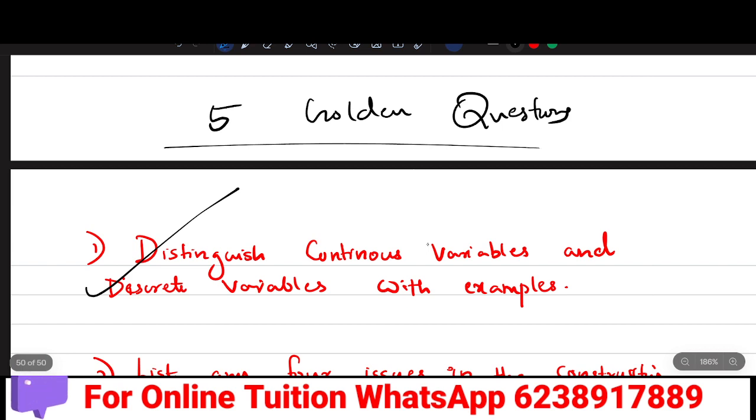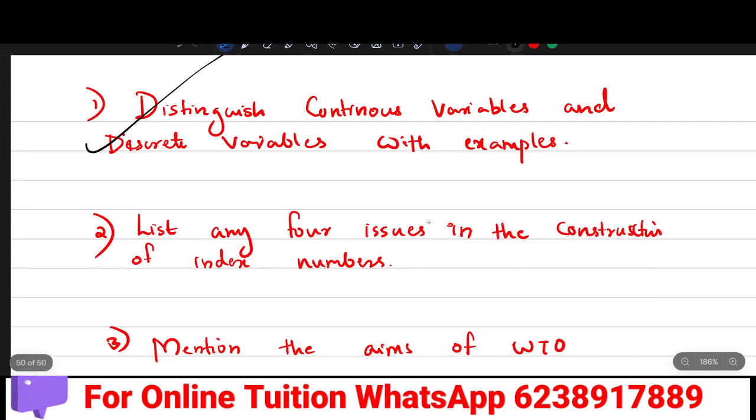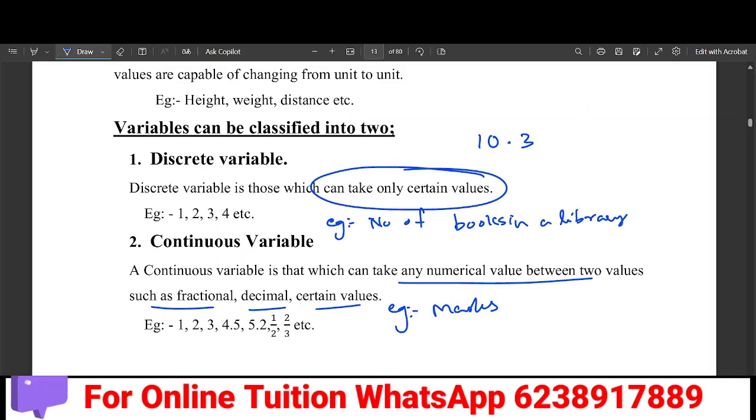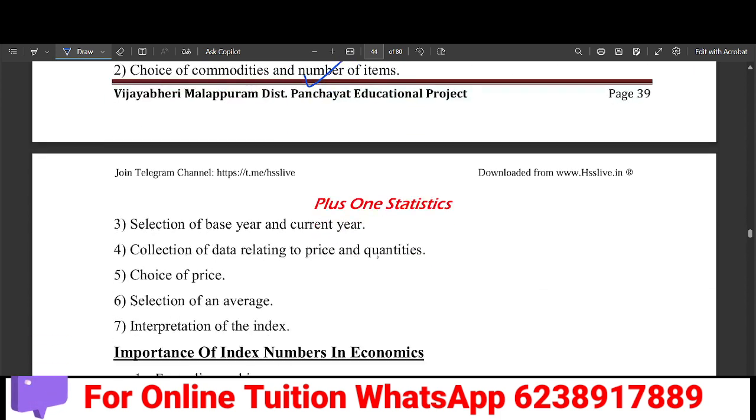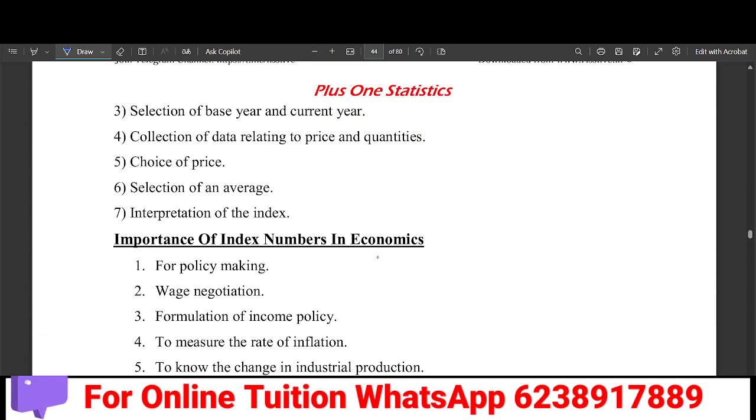Second question: List out any four issues in the construction of index number. In the construction of index number, there are four issues. Selection of purpose, selection of commodities, selection of prices. Base year and current year are selected. Then selection of average. Then interpretation of the index.